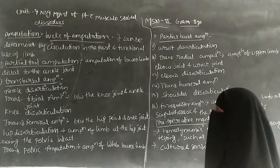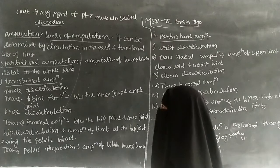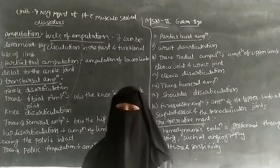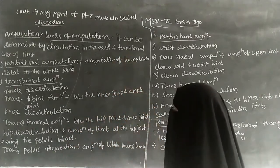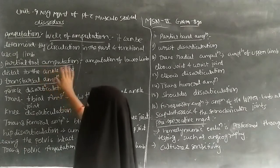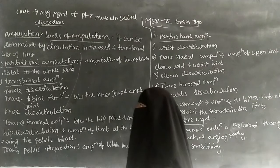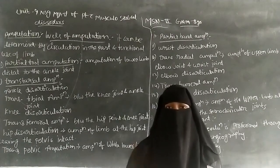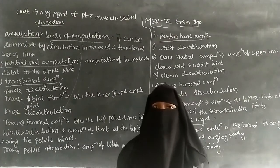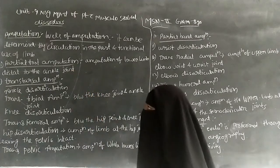The levels of amputation can be determined by the circulation in the part and functional use of the limb. The first level is partial foot amputation, which means amputation of the lower limb distal to the ankle joint — that is, from the ankle joint to the fingers. Half of the foot can be removed in partial foot amputation.